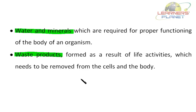Besides oxygen and carbon dioxide, the blood also transports digested food, hormones, and urea. All these substances are inevitable and need to be transported in our body so that different organ systems of the living organism work efficiently. Now let us study about a very important topic in today's session — transport in animals.